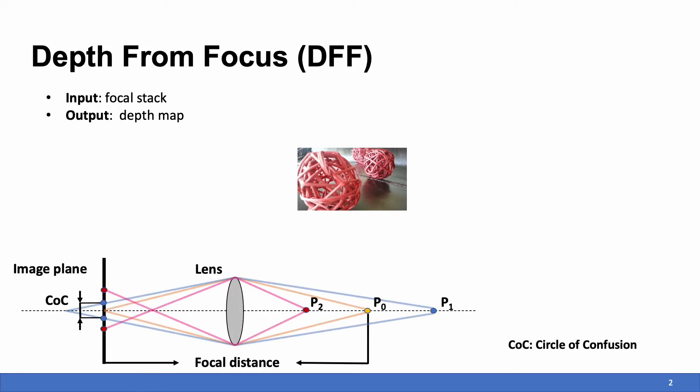For a 3D point outside the range, such as point one and two in the diagram, it will form a circle of confusion which leads to the blurry image.